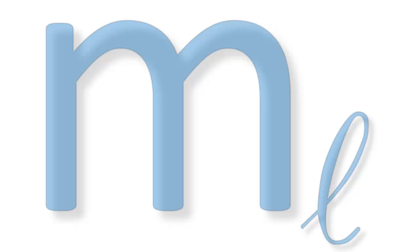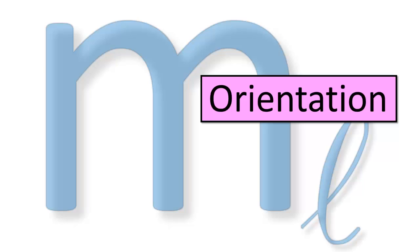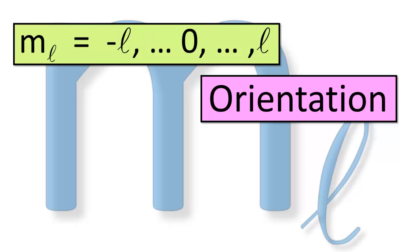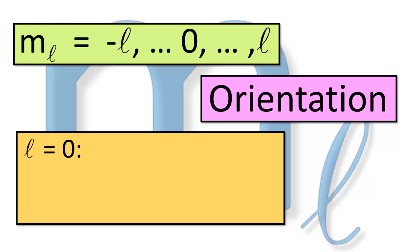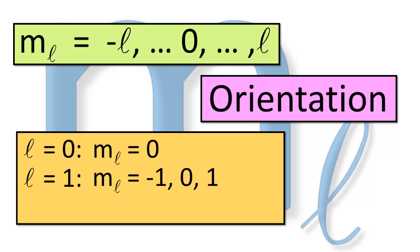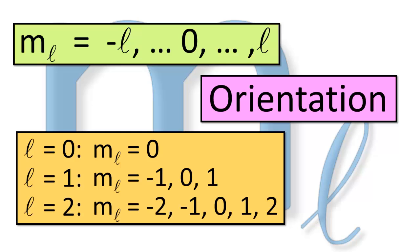Now let's turn our attention to the magnetic quantum number m sub l. It specifies the orientation of the orbital — in other words, which direction the orbital is pointing — and can have any integer value including 0 between negative l and positive l. So if l is 0, the only possible value of m sub l is 0. If l is 1, the possible values of m sub l are −1, 0, and 1. If l is 2, the possible values of m sub l are −2, −1, 0, 1, and 2, and so on.